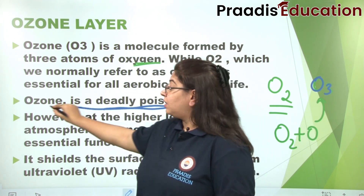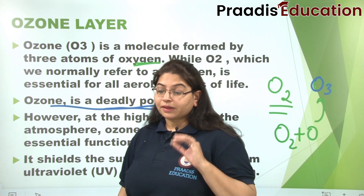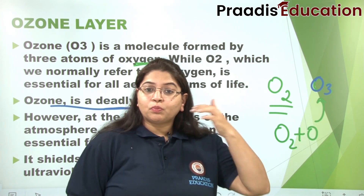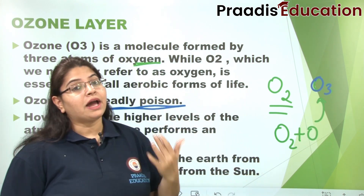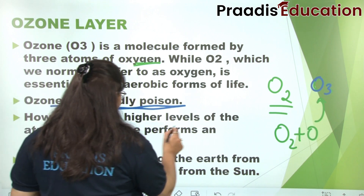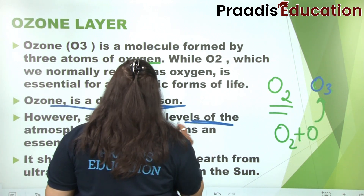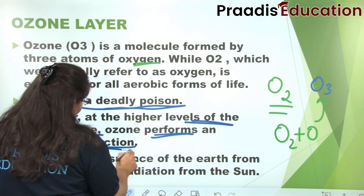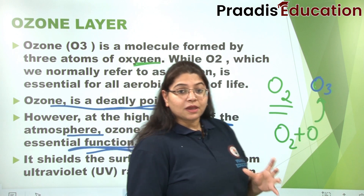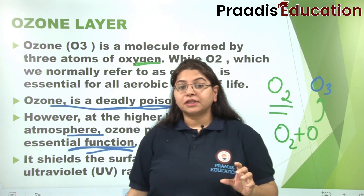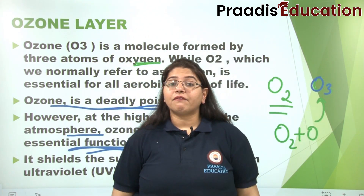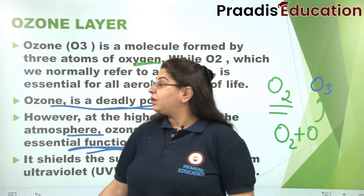Ozone is a deadly poison at the lower levels. But when we look at higher levels of the atmosphere, this ozone is very good because it performs a very important function there. It functions as a shield, or umbrella, like a covering.